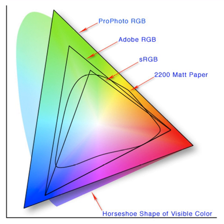A color model is an abstract mathematical model describing the way colors can be represented as tuples of numbers, e.g. triples in RGB or quadruples in CMYK. However, a color model with no associated mapping function to an absolute color space is a more or less arbitrary color system with no connection to any globally understood system of color interpretation.